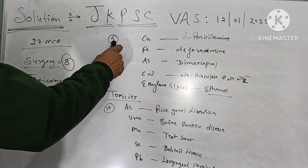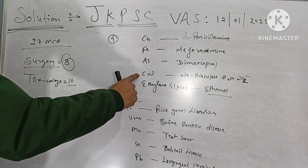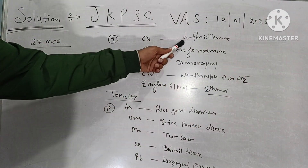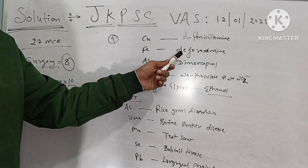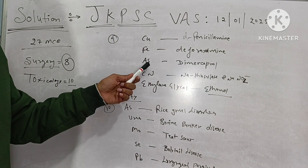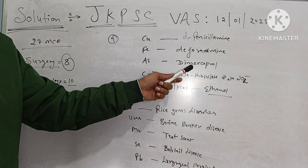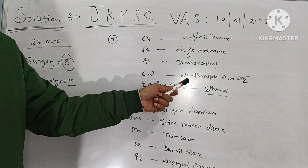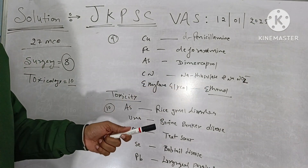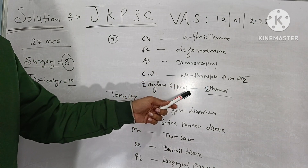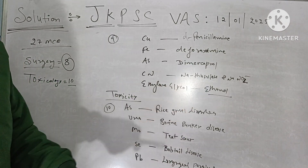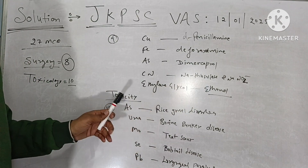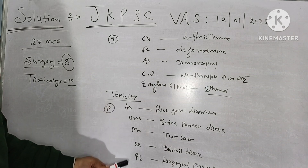Metals and their antidotes: copper — D-penicillamine; iron — deferoxamine; arsenic — dimercaprol; cyanide toxicity — sodium thiosulphate and sodium nitrite; ethylene glycol — ethanol. The next MCQ is in match-the-following format where metal and non-metal toxicities are matched with their signs and symptoms.